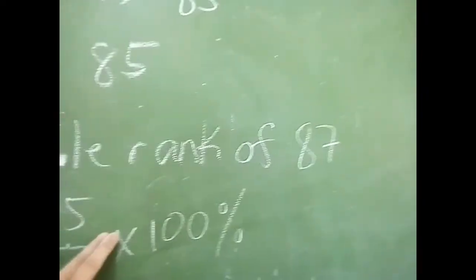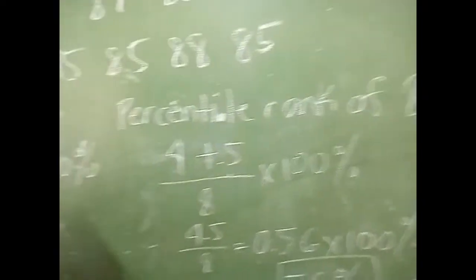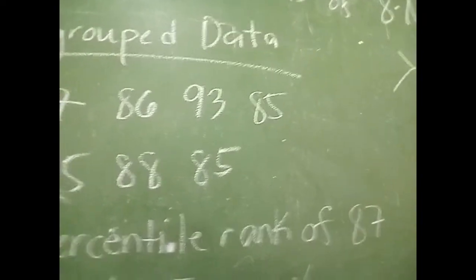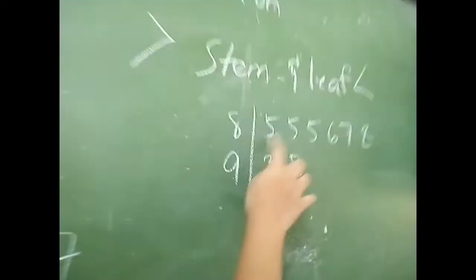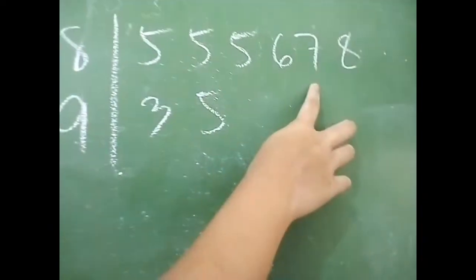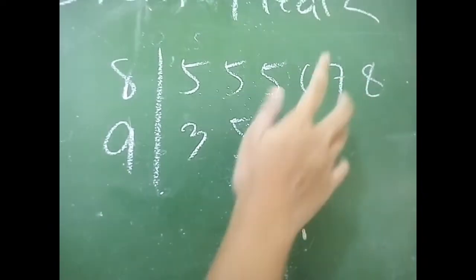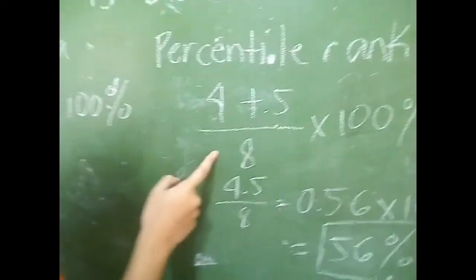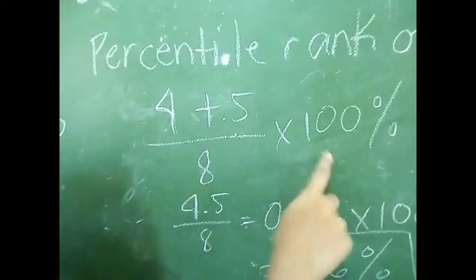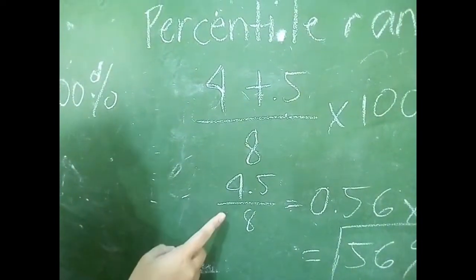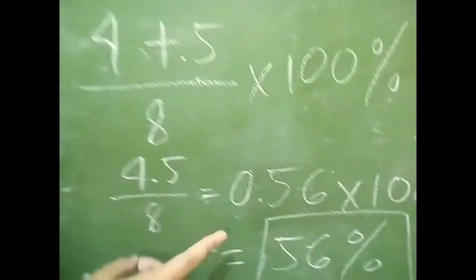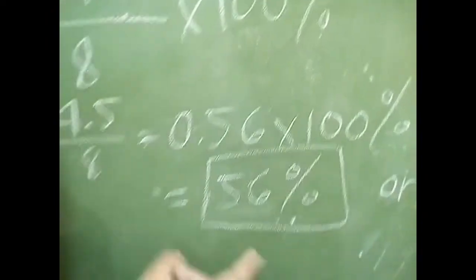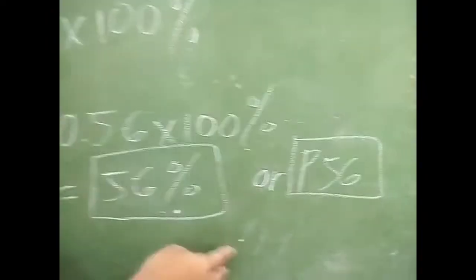For example, the percentile rank of 87. It would be at position 3.6, so the preceding count is 4. So it would be 4 plus 0.5, divided by 8, times 100%. That gives 4.5 divided by 8, which equals 0.56, times 100%, which equals 56%, or P56.